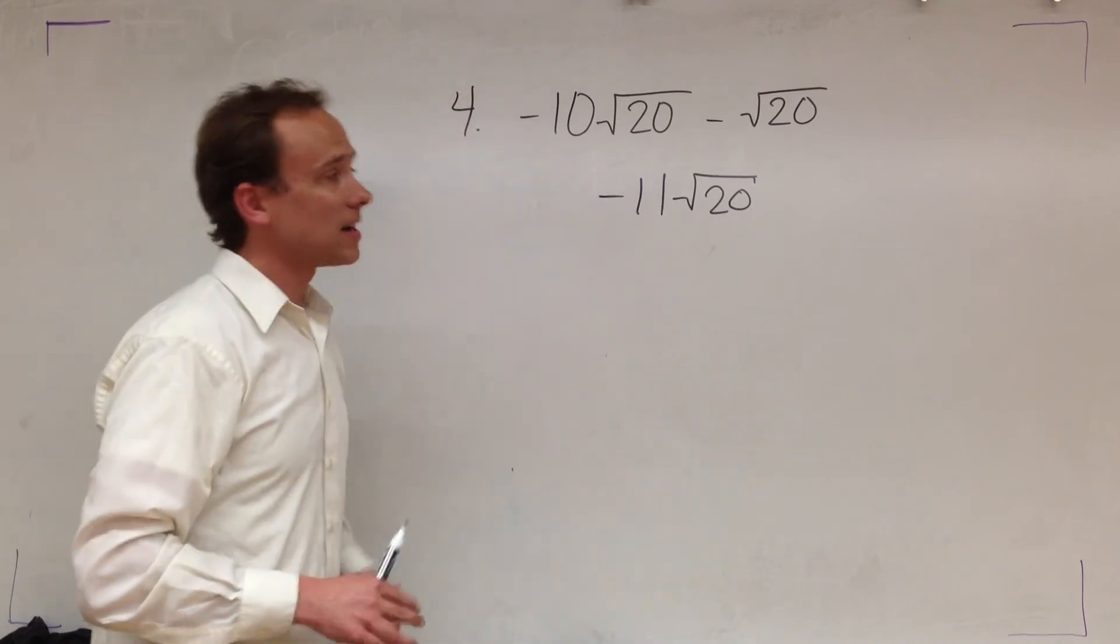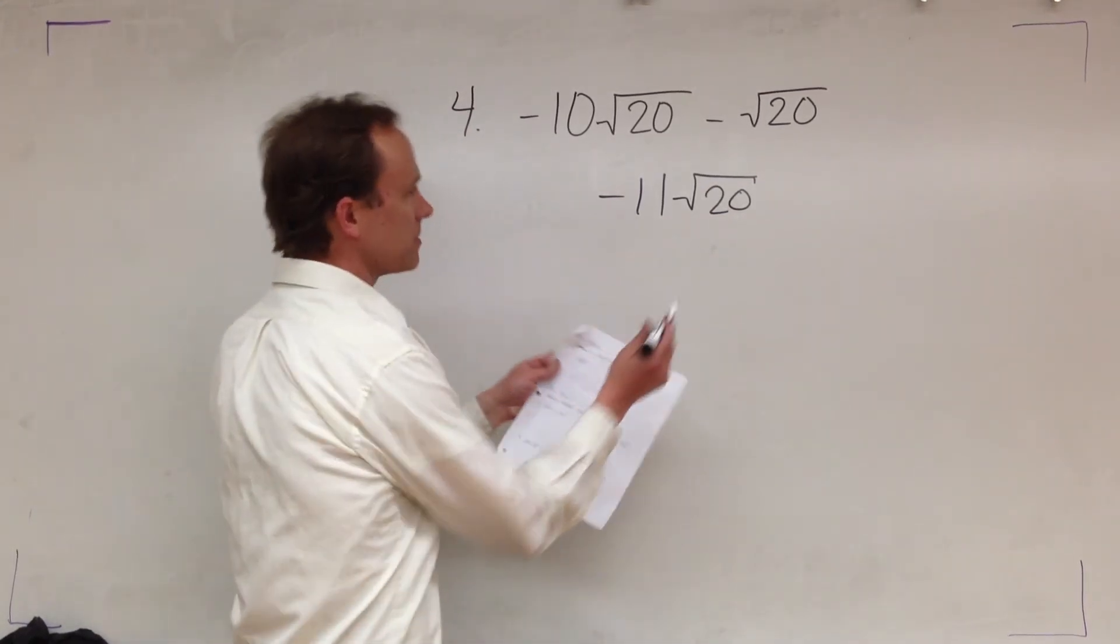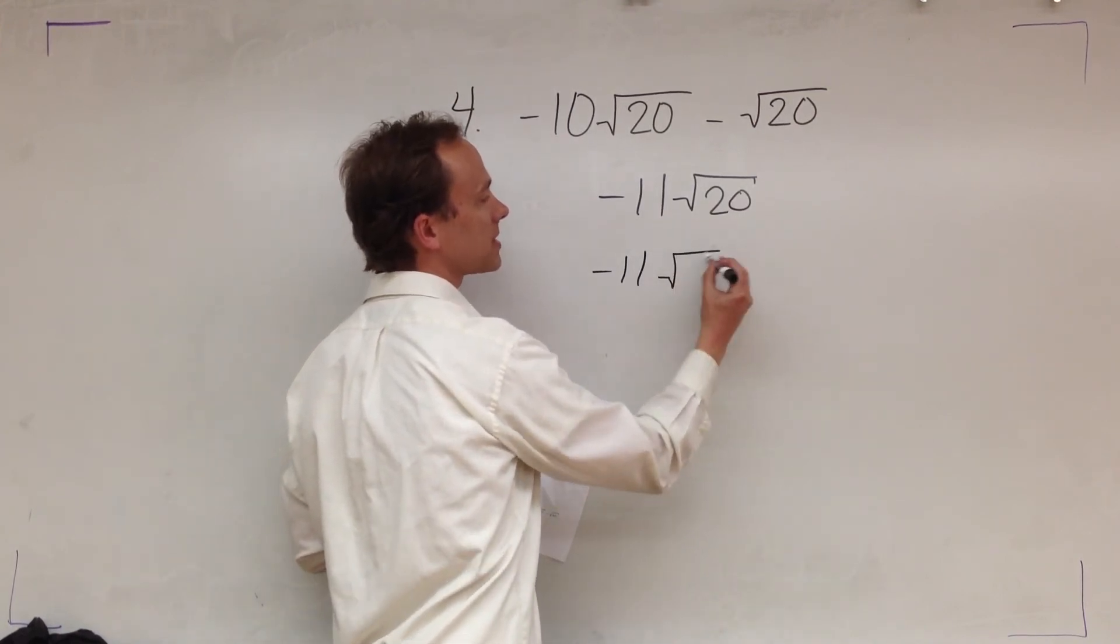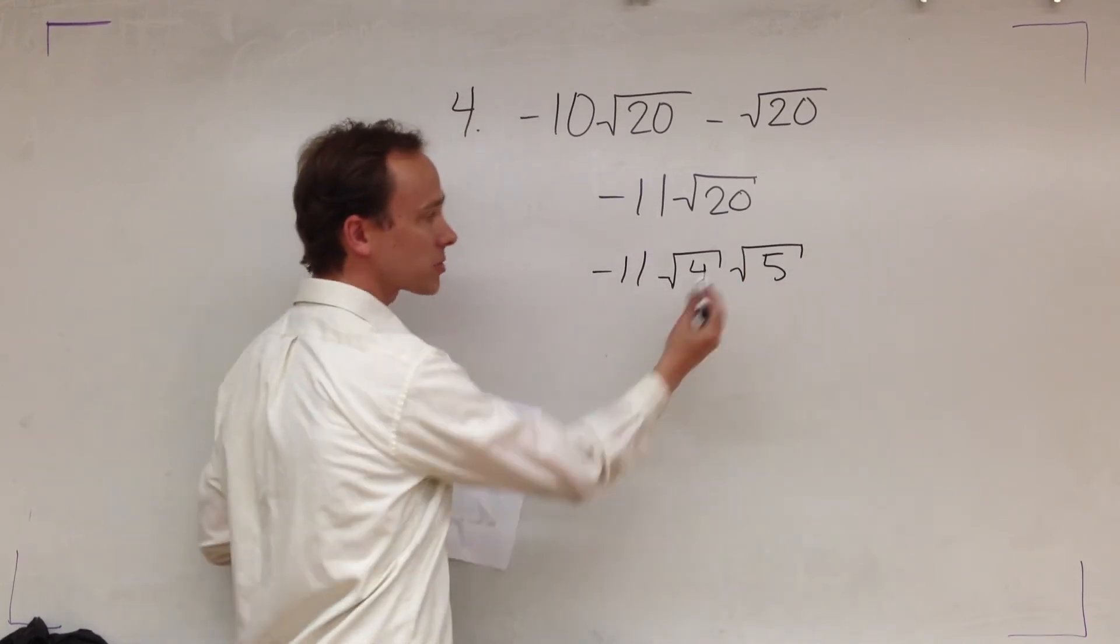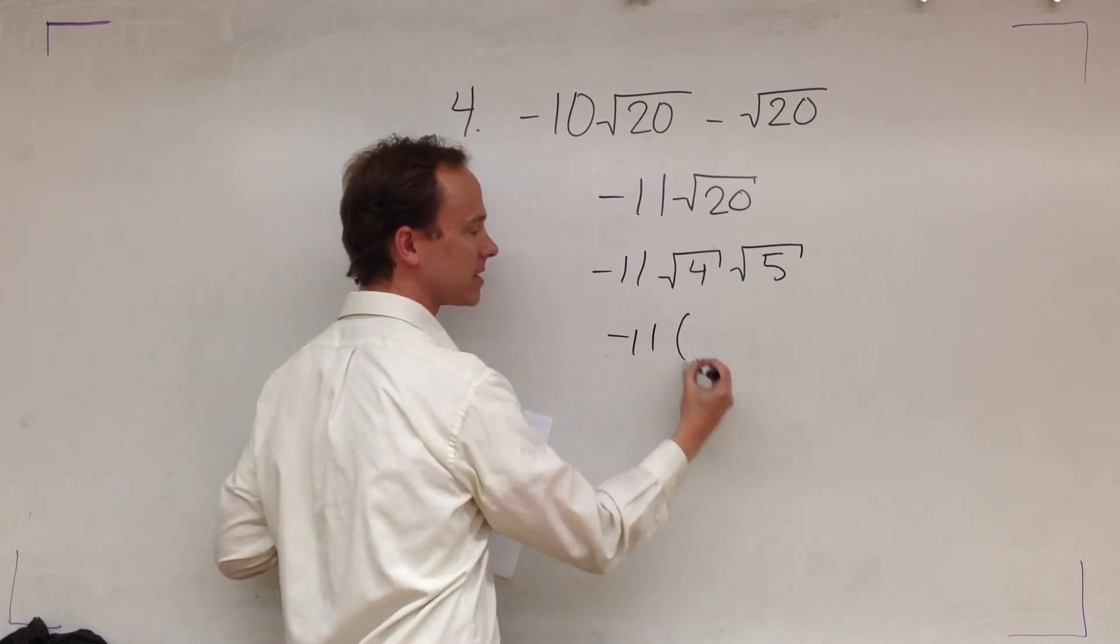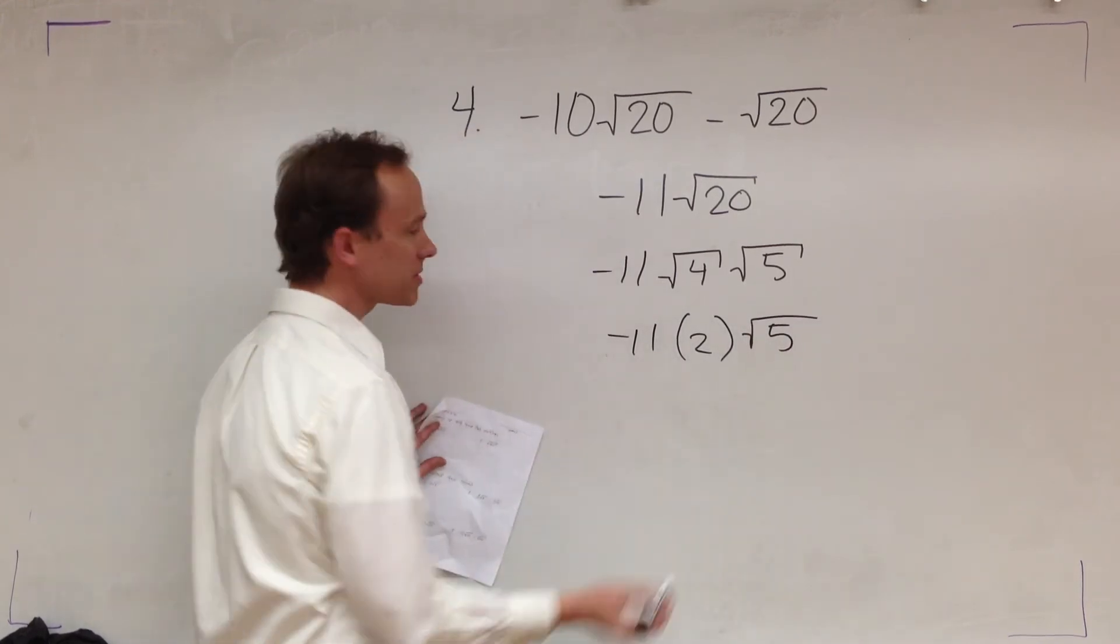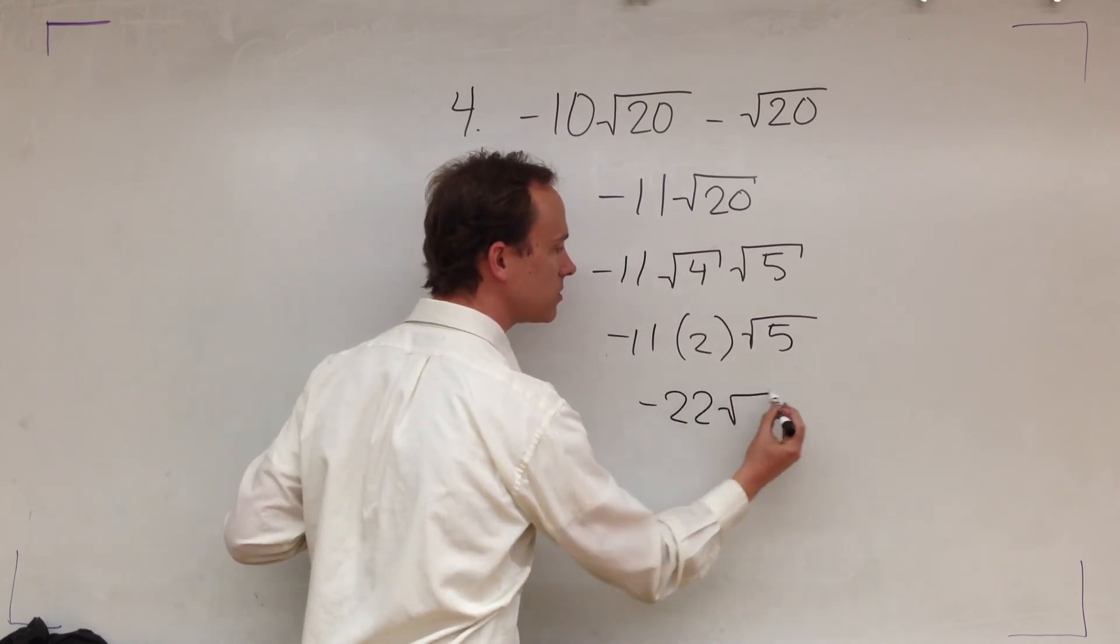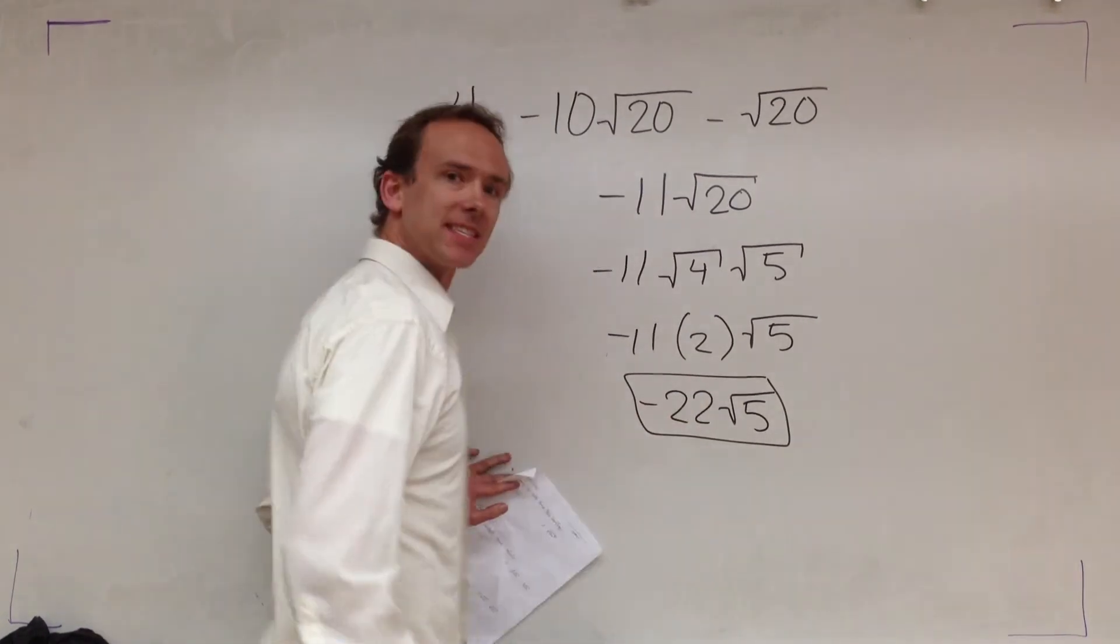Alright. I hope that somebody attempted this. If you didn't, that's all good. I mean, I'm not hating on you for that, but I hope somebody did. So now what do we got here? We got that this is 4 times 5. Square root of 4. We know what that is. That's 2 root 5. We're almost done. Negative 11 times 2 is negative 22 root 5. Holler. That's the answer.